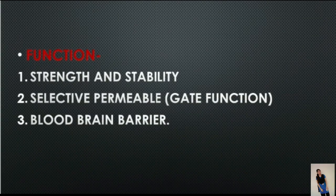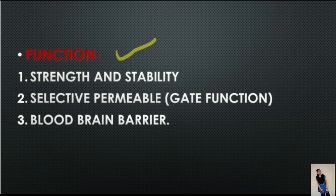There are three types of functions of tight junction. The first is strength and stability. Tight junction holds the neighboring cells of the tissue firmly and provides strength and stability to the tissue.